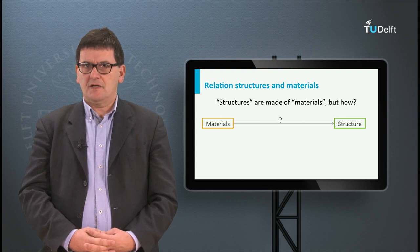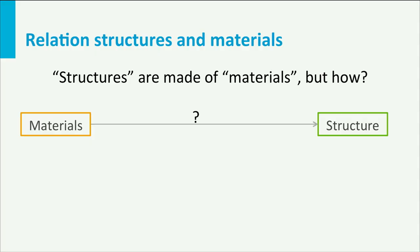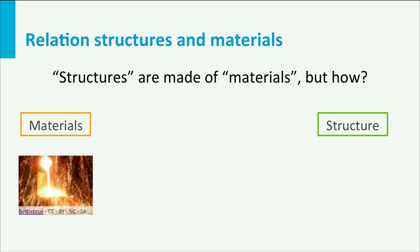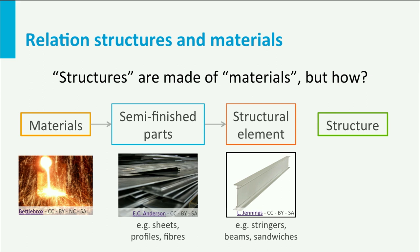So we might ask how are structures made of materials? I will use the following sequence. First, materials are retrieved from ores, which are obtained from the crust of the earth by mining. Or materials are retrieved from, for example, oil by diffraction and processing. Once the material is made, the materials will be shaped into semi-finished products. Think for example about metal sheet which is rolled to thickness on a mill.